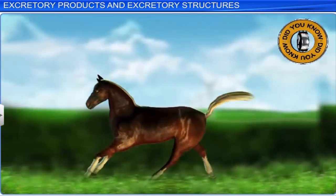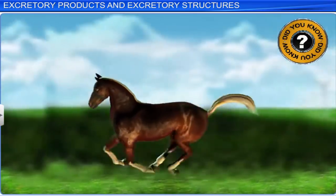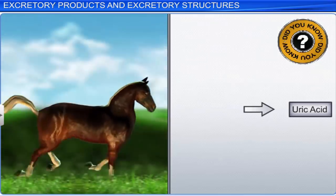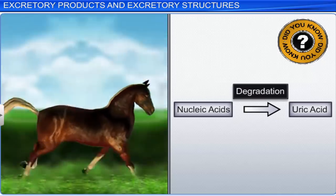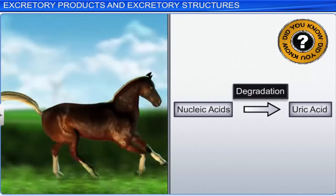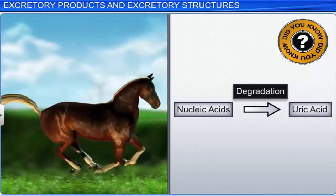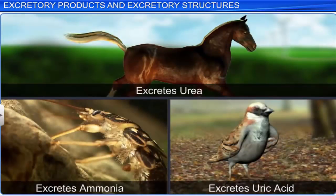Did you know that in mammals, uric acid is formed by the degradation of nucleic acids, and is excreted as a part of urine? As animals excrete nitrogenous wastes in different forms, the structure of their excretory system also varies.